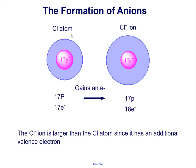Shown here is that the chlorine atom is smaller than the chlorine ion. The chlorine ion is larger than the chlorine atom since it has an additional valence electron.